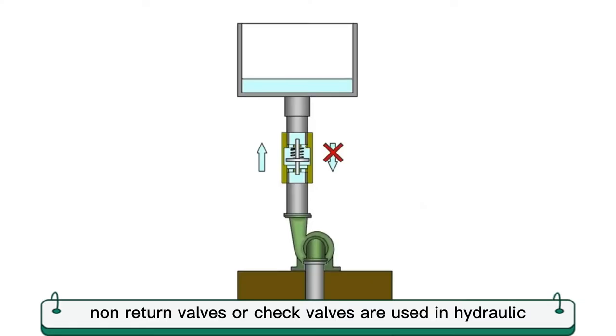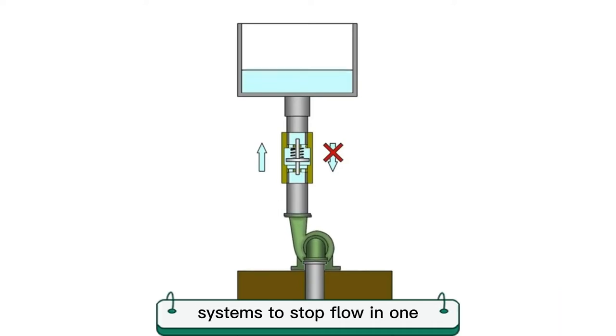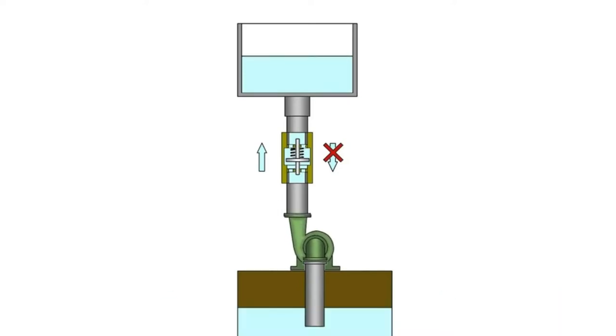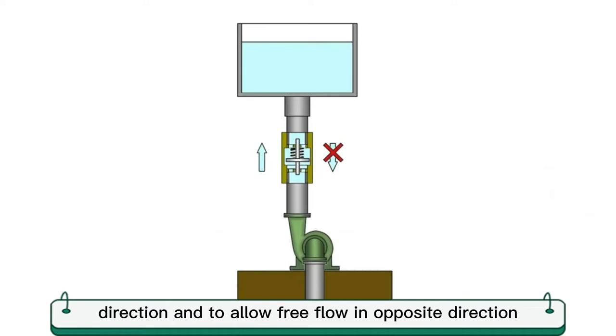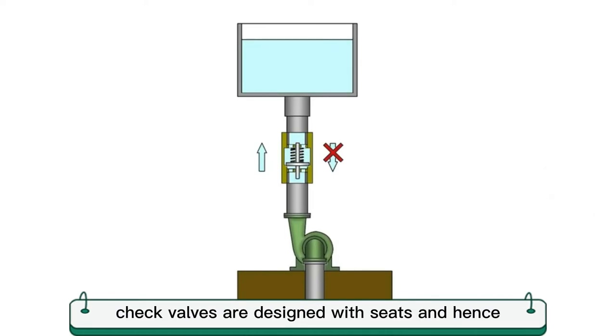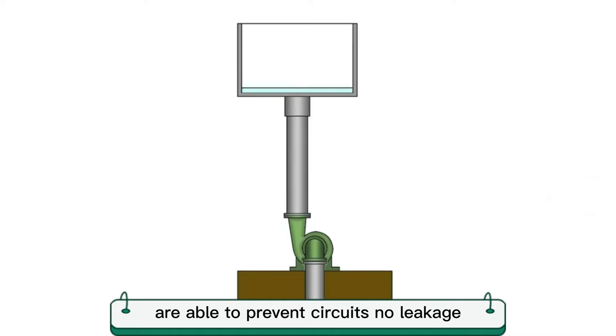Non-return valves or check valves are used in hydraulic systems to stop flow in one direction and to allow free flow in the opposite direction. Check valves are designed with seats and are able to prevent leakage in circuits.